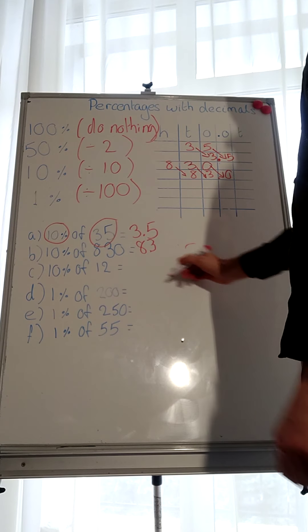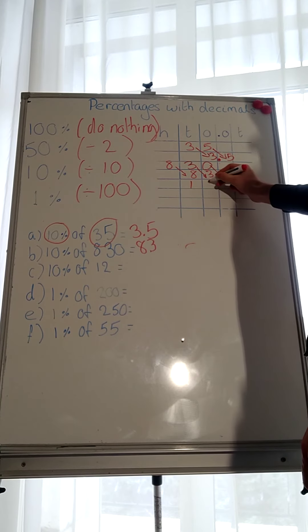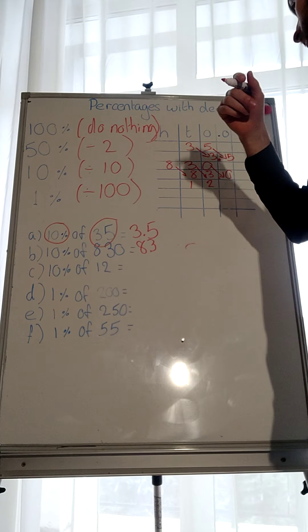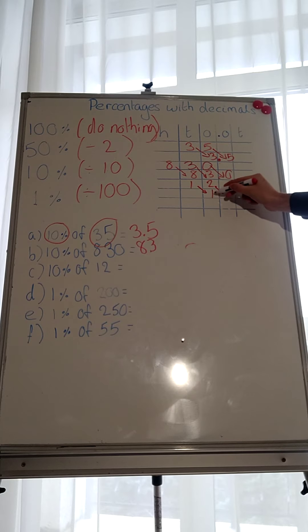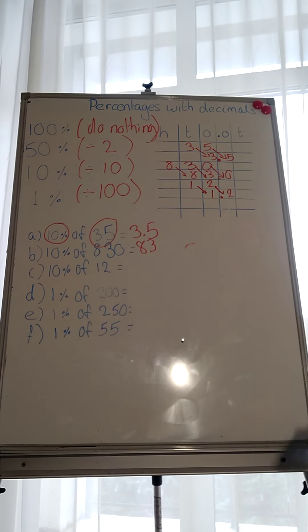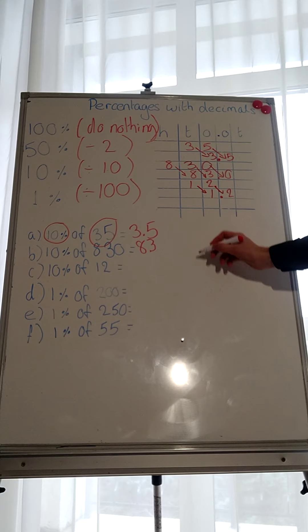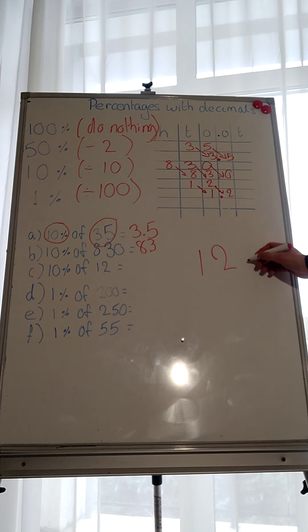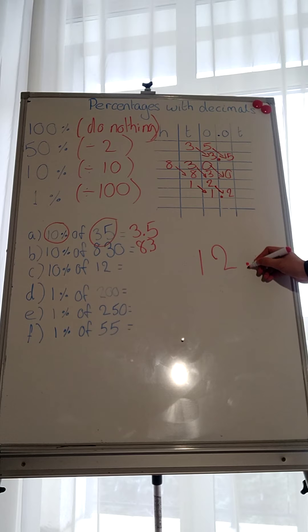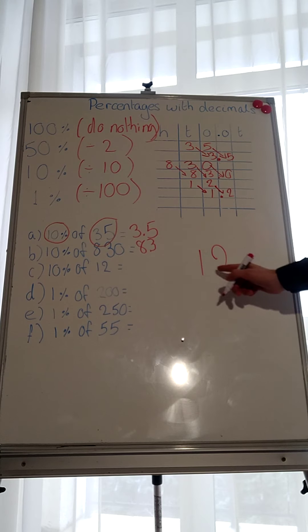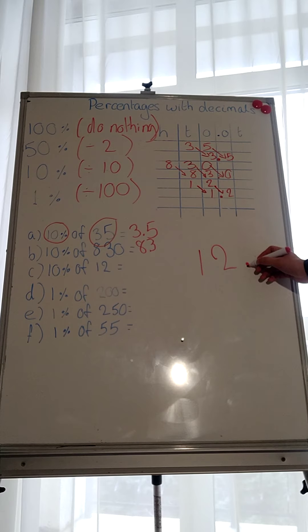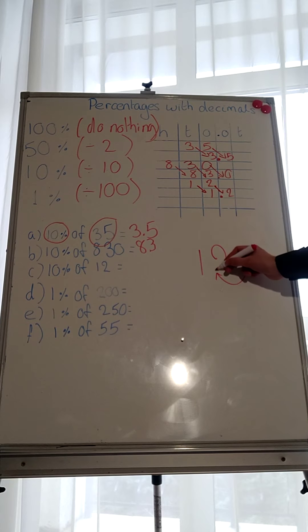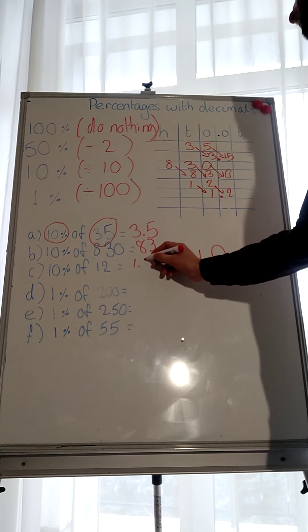10% of 12. So again, put it on the place value chart. 12. So dividing it by 10. Where are we going to move it to at the place value chart? We move it 1 to the right, which gives us 1.2. Simples. If we wanted to use it the easy way, 12, you would have the point here, because it's a whole number. Now, think. How many places do you move it to the left? Do we move it 1 to the left for 10% or 2 to the left? Because it's 10%, we move it 1 to the left, which gives us 1.2. Easy peasy lemon squeezy.